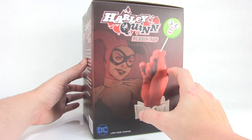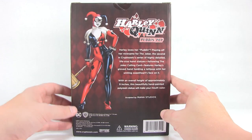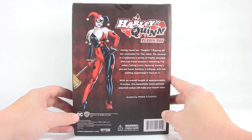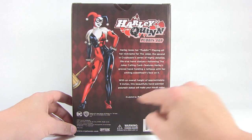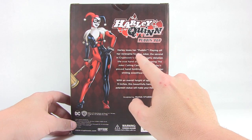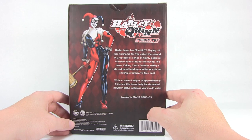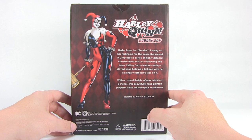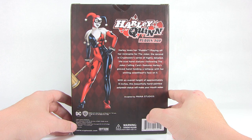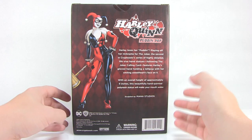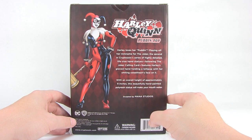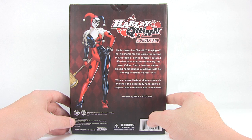It's in a nice fully enclosed box here with a picture of the actual statue on the front and the sides. The back we've got some artwork of Harley Quinn and check it out, it says it right here: Harley loves her Puddin'. Playing off her nickname for the Joker, the second in Cryptozoic series of highly detailed life-size hand statues following the Joker calling card features Harley's gloved hand holding a lollipop with her smiling sweetheart's face on it.